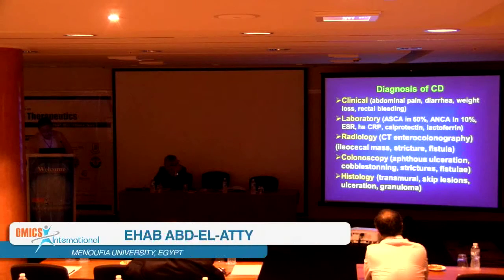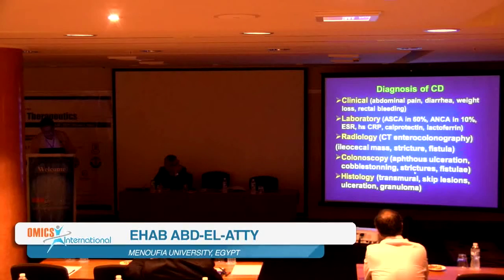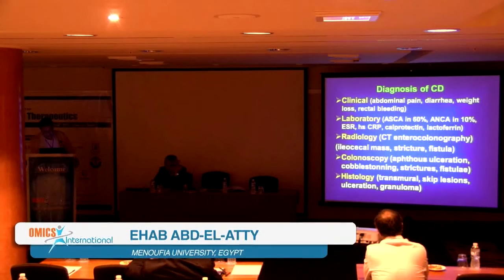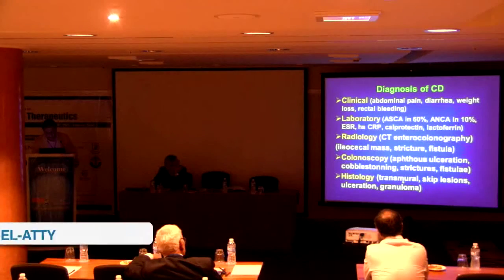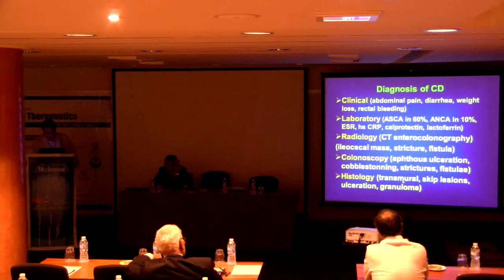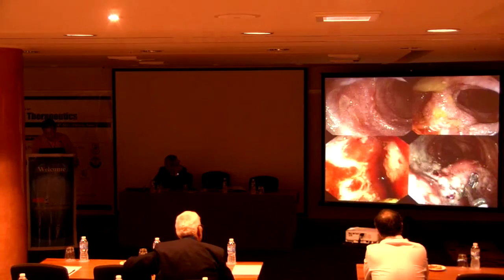On colonoscopy, you can see aphthous ulceration, cobblestoning, stricture, or fistula. On histology, the lesion is transmural — affecting mucosa, muscularis, and submucosa — and there is a skip lesion pattern, meaning the lesion is not continuous.